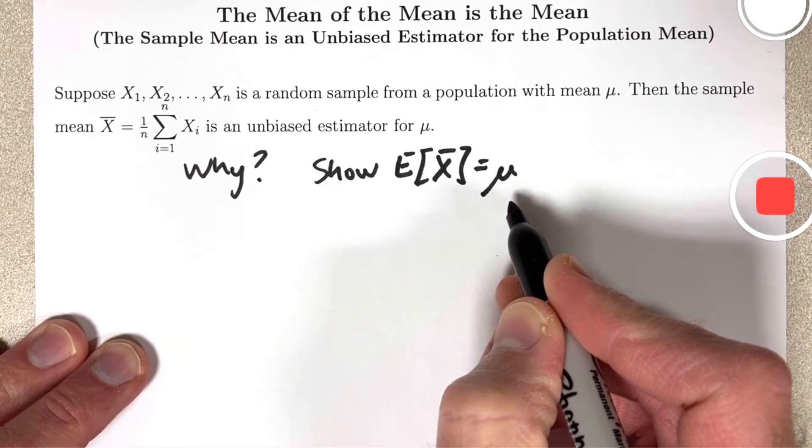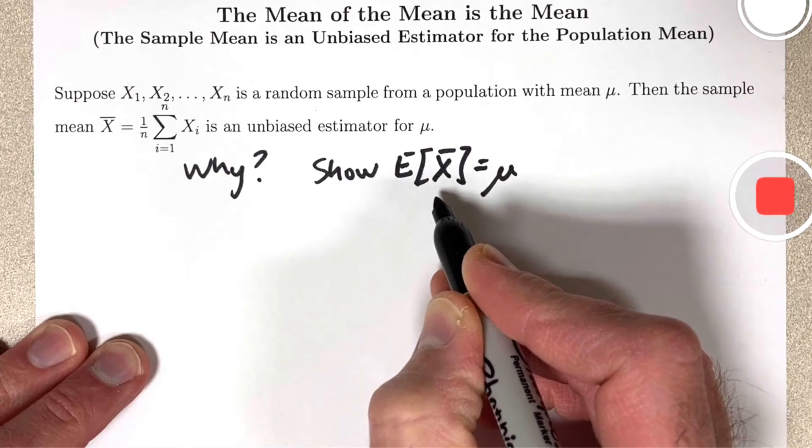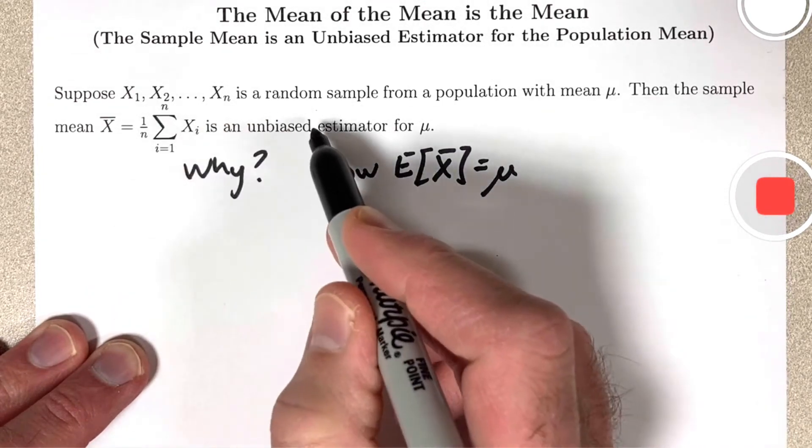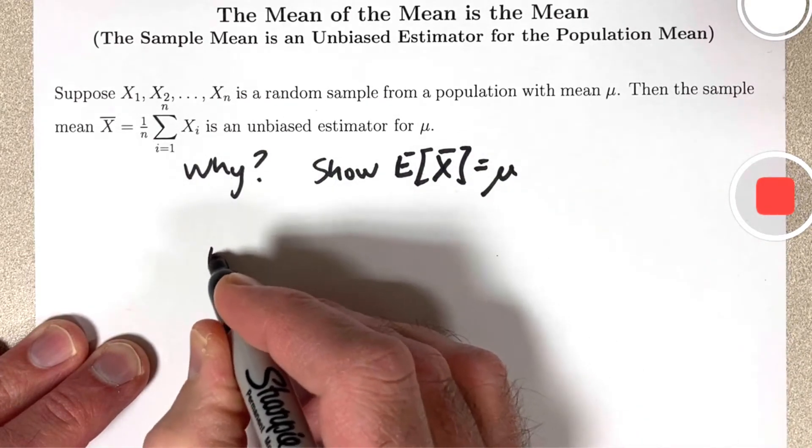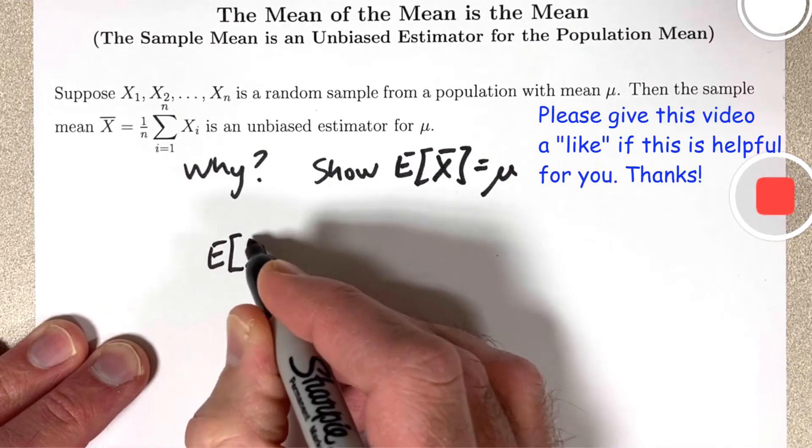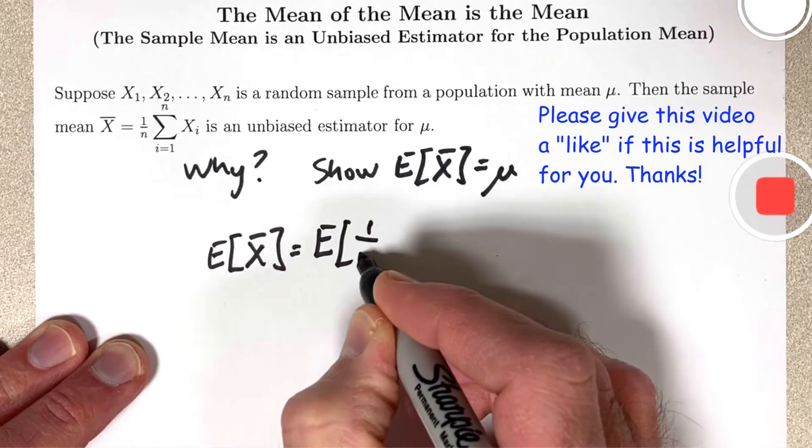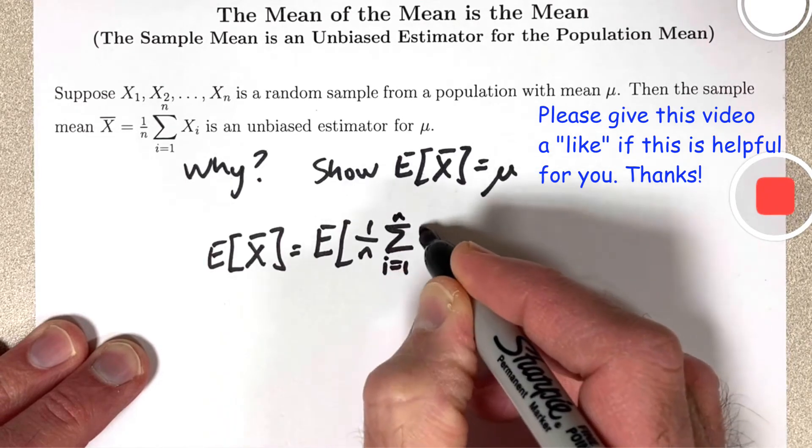How do you do this? You use the linearity of the expected value operator and the formula for x-bar, as well as the assumption that these xi's form a random sample from the population with mean mu. Go ahead and do the calculation. Replace x-bar with its formula: 1 over n times the summation i goes from 1 to n of xi.